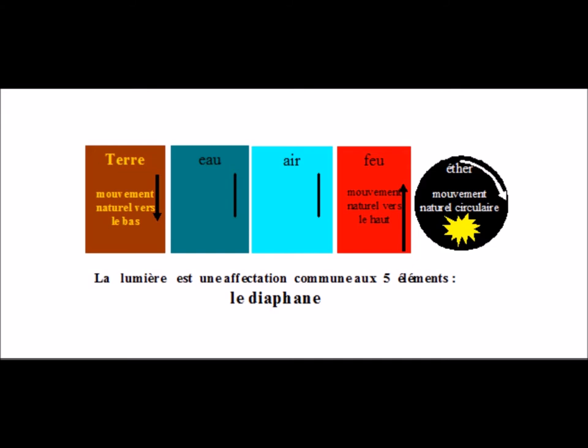Aristotle therefore concludes that light is a property common to all elements: ether, fire, air, water and earth, the diaphanous. The great difference with Plato is that these five elements have of their own an absolute existence. No passage from one to the other is possible.